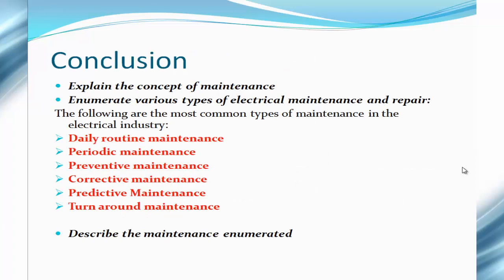By way of conclusion, this lecture series has explained the concept of maintenance and enumerated the various types commonly available in the electrical industry. These include the daily routine maintenance, periodic maintenance, preventive maintenance, corrective maintenance, predictive maintenance, and turnaround maintenance. The features associated with each of these maintenance types have also been discussed in this lecture series.